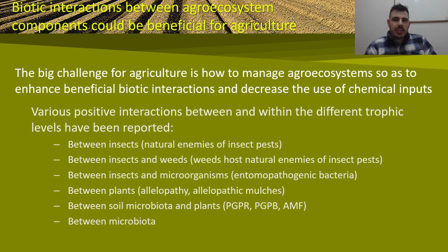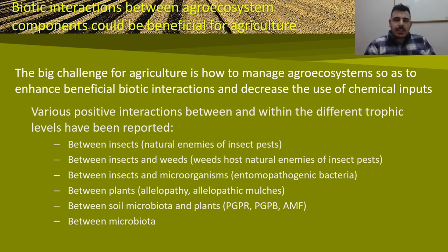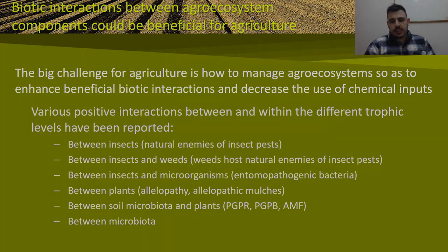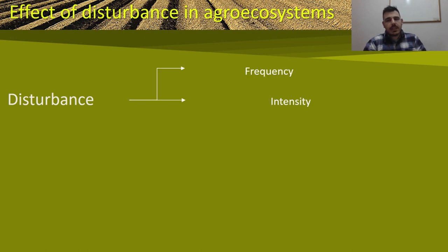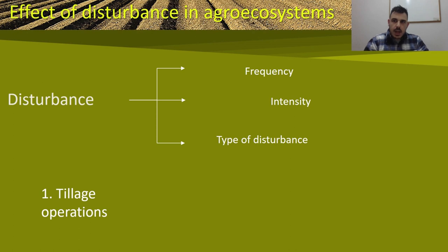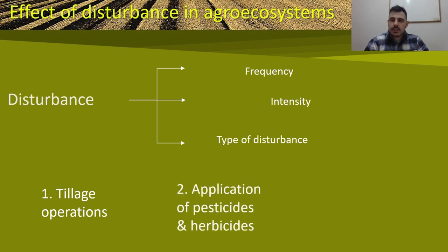Some of these interactions are listed in this slide. Most happen at the soil level, so apart from climate change, tillage can also disturb these interactions. The degree of disturbance in agro-ecosystems varies greatly in terms of frequency, intensity and type. The most dominant factors are tillage operations, application of pesticides and herbicides, and crop harvest. One of the most disturbed systems in agriculture is the vegetable production system.